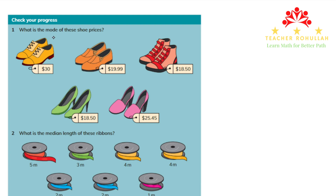The first question asks: what is the mode of the shoe prices? We have some prices and it's asking about the mode. The mode is the value that occurs most often. We have $30, $19, $18, $18.50, $18.50, and $25.45. The mode is $18.50 because it is repeated two times in the shoe prices. So that's the mode.